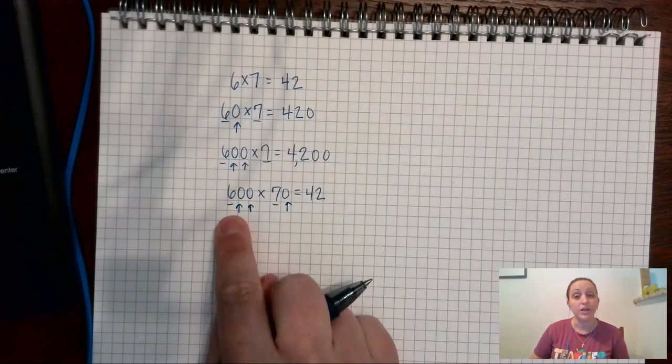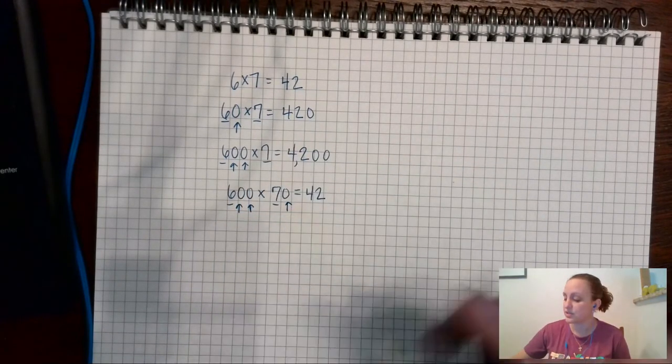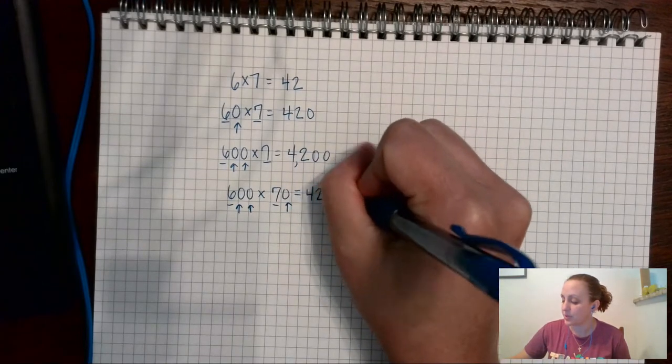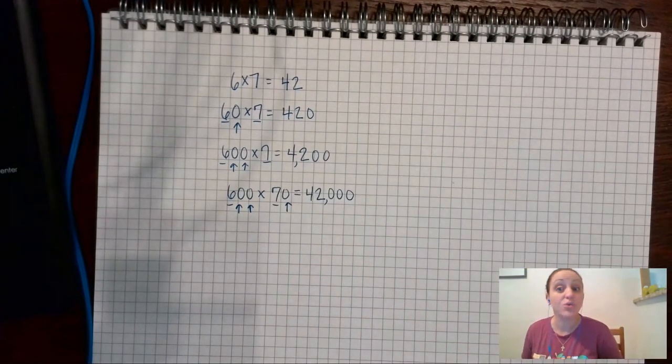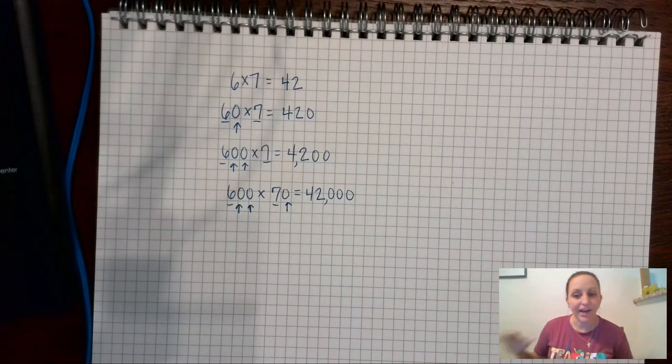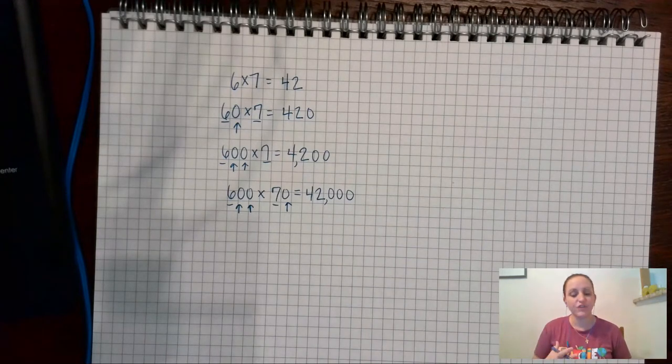These two numbers I'm multiplying together are my factors, okay, so both of my factors and I have one, two, three zeros. So I'm going to add one, two, three zeros to the end. I got 42,000 but I did that so fast right? I did it so fast in my head and that can help us then when it comes to estimating when it's multiplication.